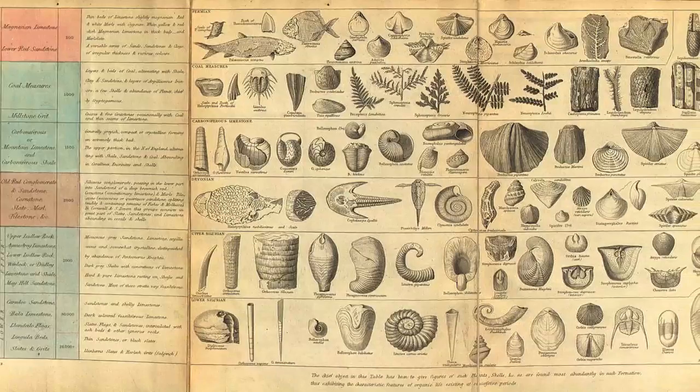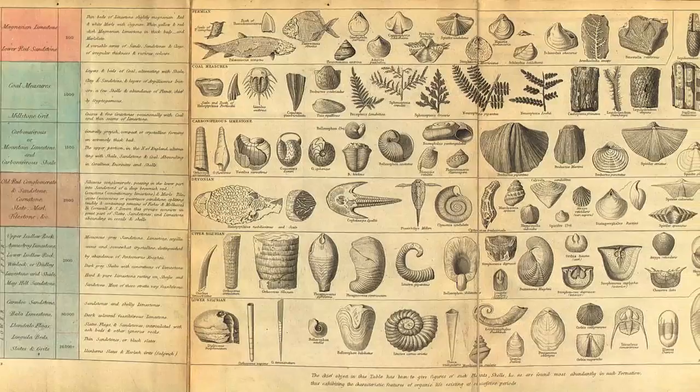Darwin referred to the origin of species famously as one long argument. The actual structure of the argument is very short, and then it takes a lot of time to provide the evidence for it.